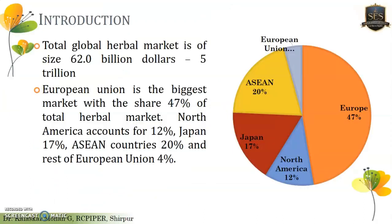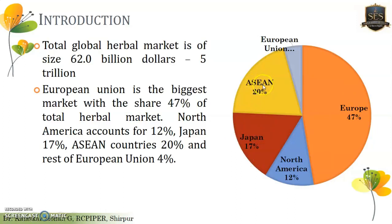The demand of the herbal market is growing day by day. At present, the total herbal market is up to 62 billion dollars, which is comparatively very high. The European Union contributes the highest utilization of herbs in the world at 47%, followed by Japan where the traditional system is very well practiced at 17%. ASEAN — the Association of Southeast Asian Nations — contributes 20%, then North America 12%, and the rest of the European Union 4%.